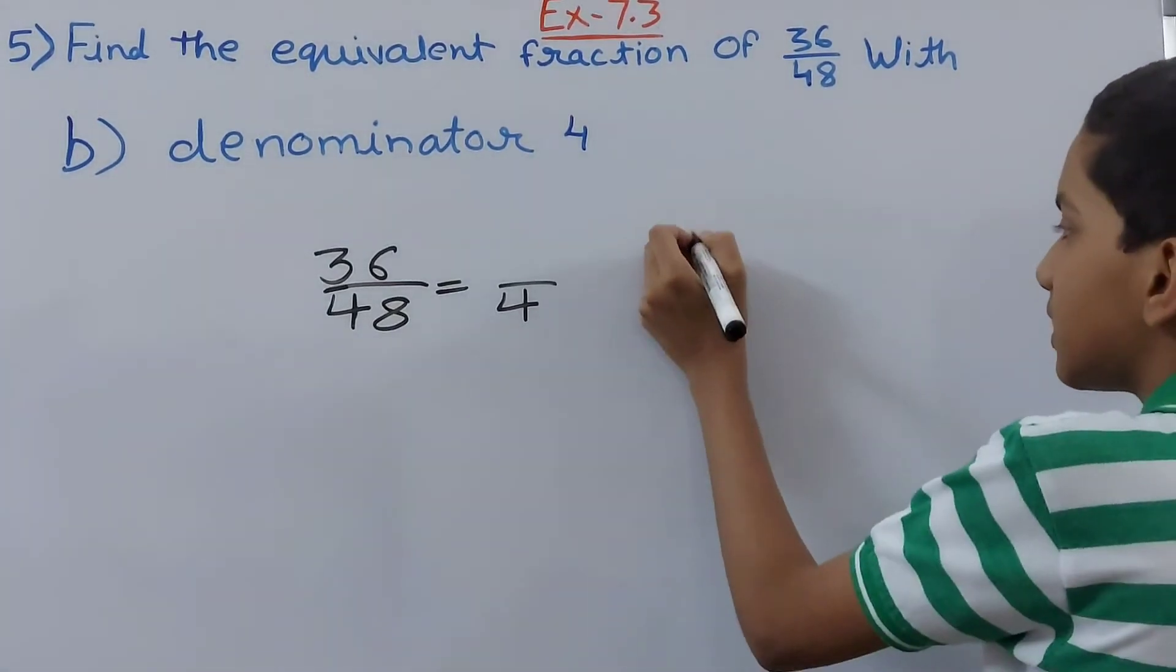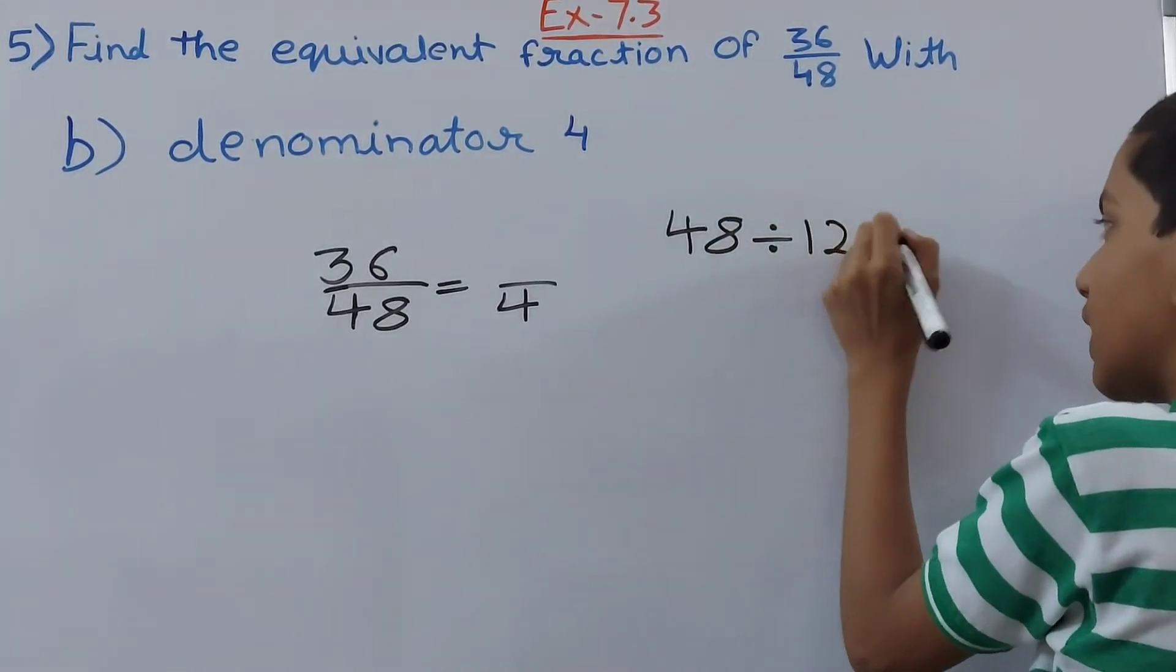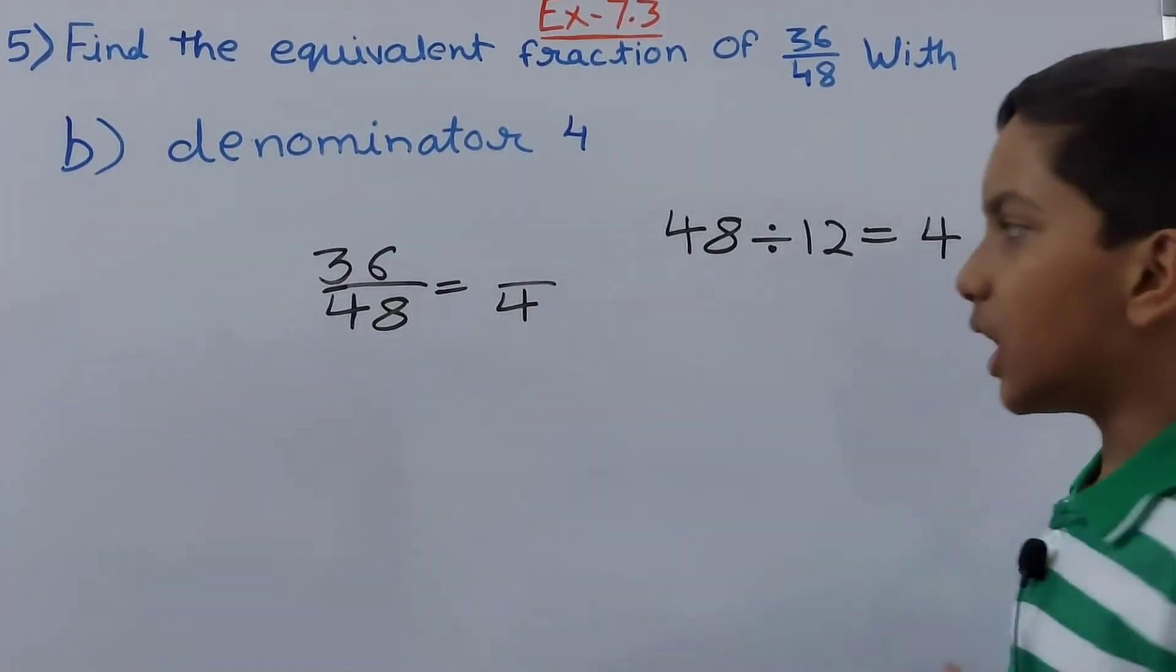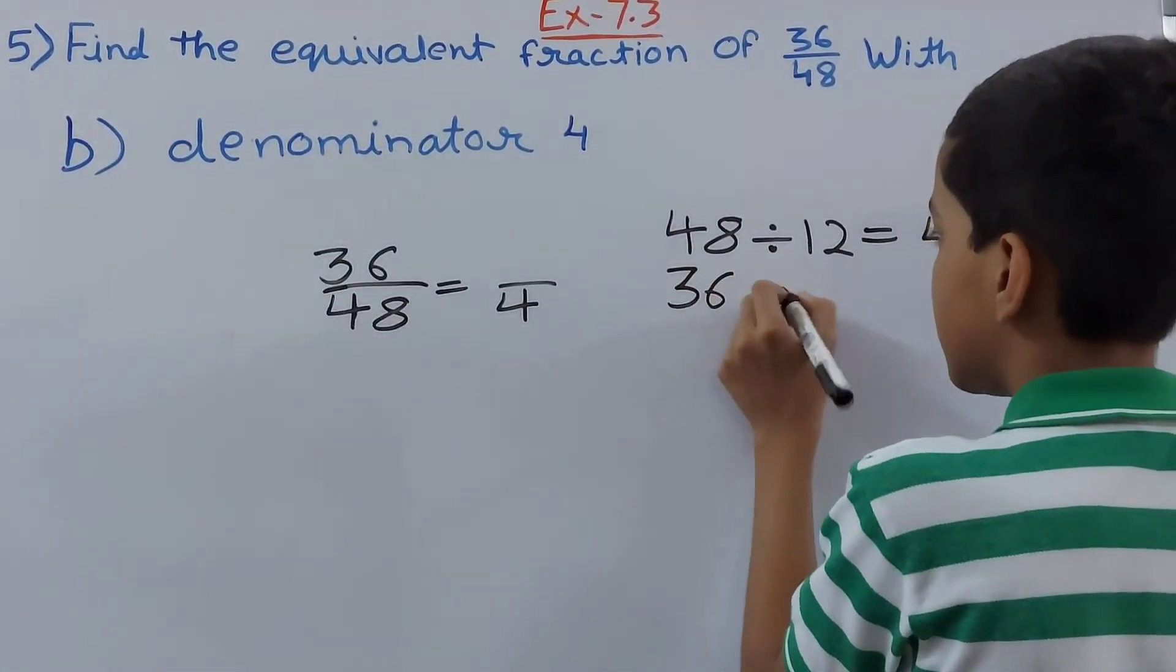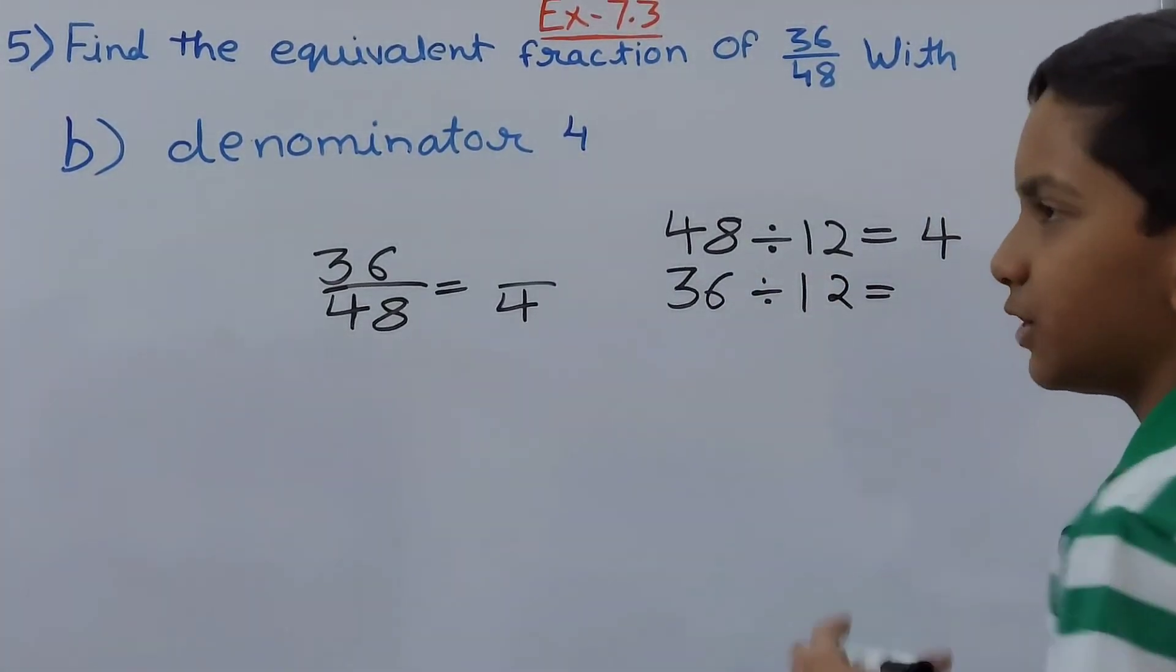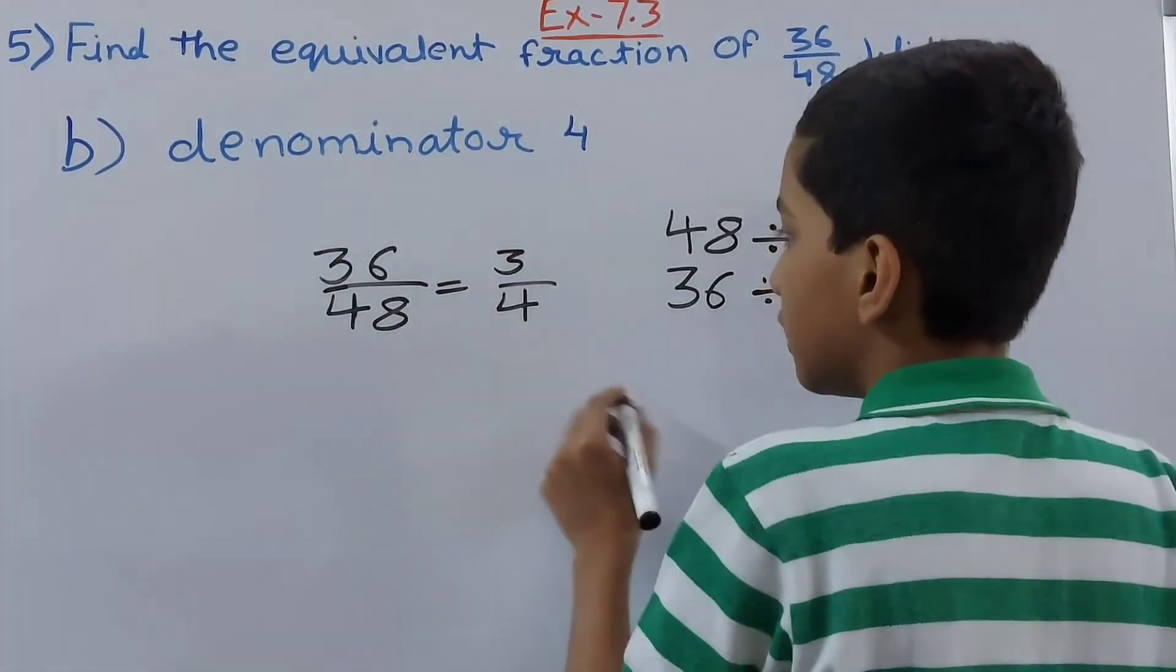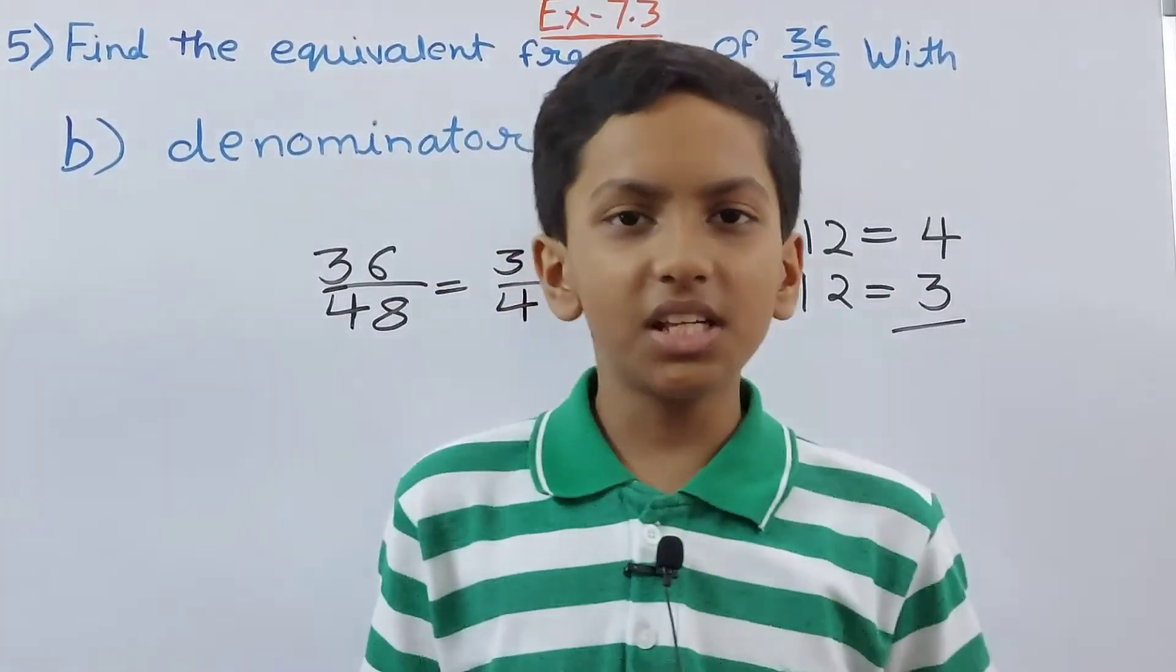We can write that 48 when divided by 12 will give us 4. Same we will have to do with the numerator which is 36. 36 divided by 12. As we know 12 into 3 is 36, so we have 3 here. That means in the numerator we will write 3. So this becomes 3 upon 4. And friends this is all for today.